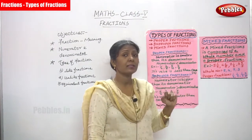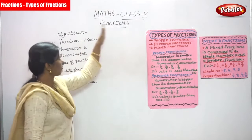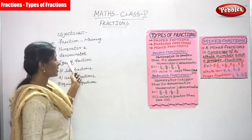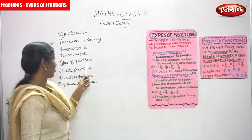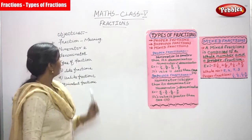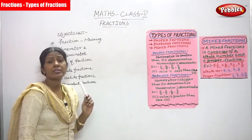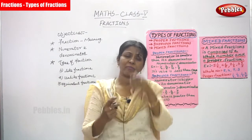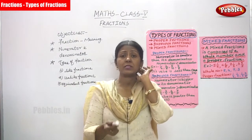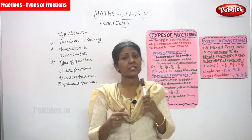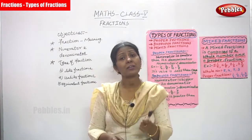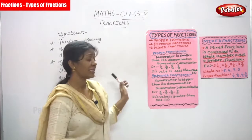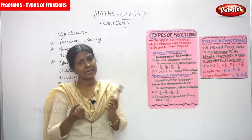We have already seen the objectives of fractions. Fractions meaning — that is numerator and denominator. Now we are going to see types of fractions. The meaning of fraction: fraction represents a part of a whole thing, and it shows a part of one whole thing or a group. I gave the example very clearly using chocolates and explained it clearly.